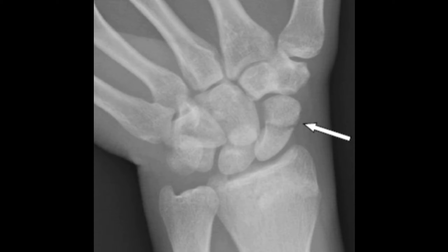Scaphoid fracture is the commonest fracture in the hand. Any young patient having a fall on an outstretched hand, presenting with pain at the base of the thumb, tenderness in the anatomical snuff box, and pronation followed by ulnar deviation of the hand being painful — suspect scaphoid fracture. Do an X-ray, but in most cases you cannot see the fracture initially. Apply a cast and ask the patient to come back after two weeks, then repeat the X-ray.